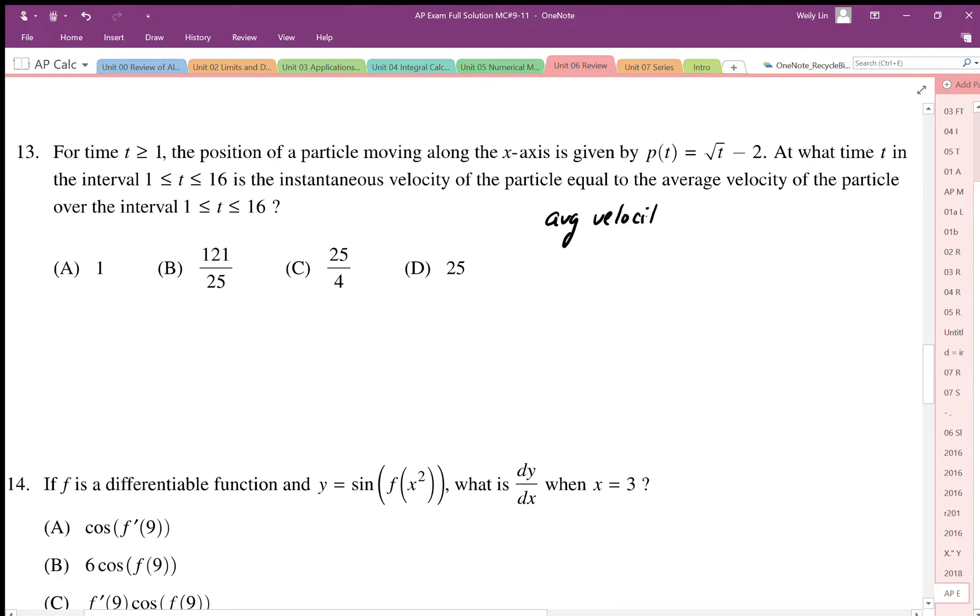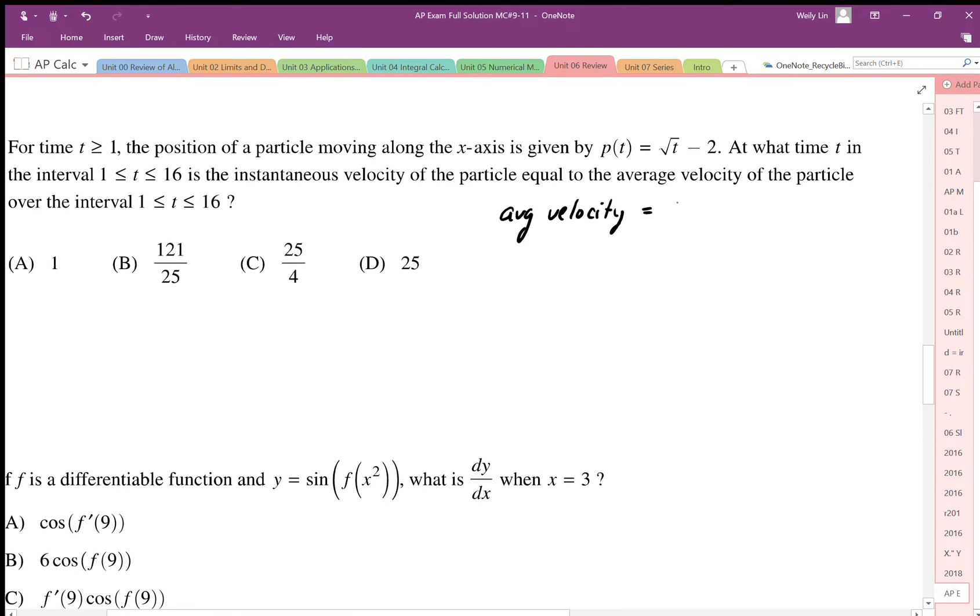Because that's a p function, the velocity, the slope of that is the velocity function. So average slope, since it's continuous, the root function is continuous function in that interval, we can calculate average slope. The average slope is equal to p of 16 minus p at 1 over 16 minus 1.